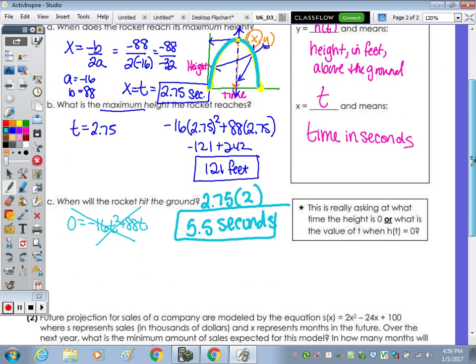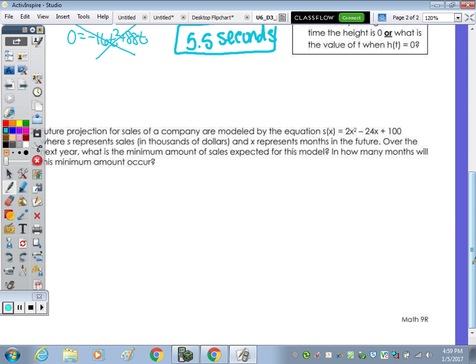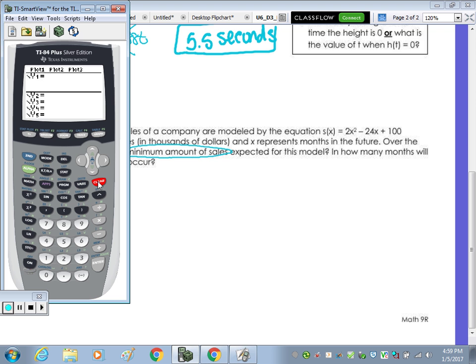Number 2, and then I'll actually show you some things on the calculator with number 2. Future projections for sales of a company are modeled by the equation s equals negative 2x squared minus 24x plus 100, where s represents sales in thousands of dollars and x represents months in the future. Over the next year, what is the minimum amount of sales expected for this model? So the minimum amount of sales, let's take a look at what this curve looks like. So y equals 2x squared, so it's a positive x squared, so that should give you a hint if it's right side up or upside down, minus 24x plus 100, graph. We can see part of it, but let's look to change our window for the x-axis. So again, we're looking at sales for a company in thousands of dollars. So let's change to 50,000, graph.